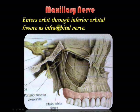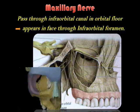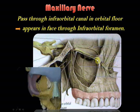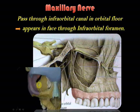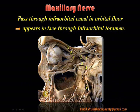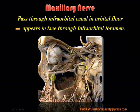From the pterygopalatine fossa, the maxillary nerve enters the orbit through the inferior orbital fissure and continues as the infraorbital nerve. It then passes through the infraorbital canal in the floor of the orbit, and appears on the face through the infraorbital foramen. As seen in the diagrams, the nerve travels below the orbital bone in the infraorbital canal and exits at the infraorbital foramen.